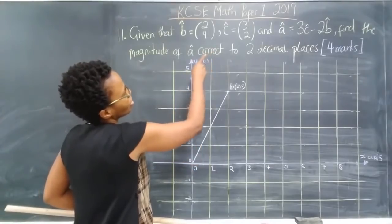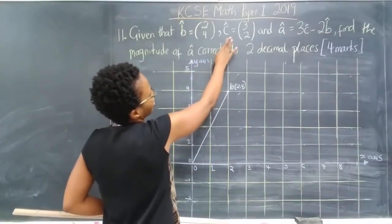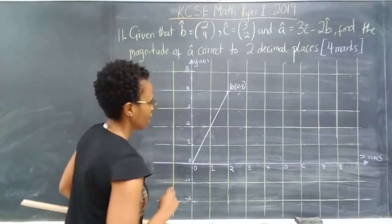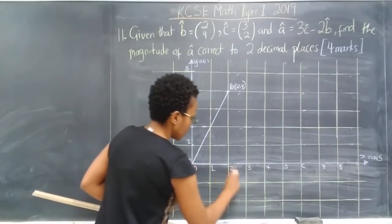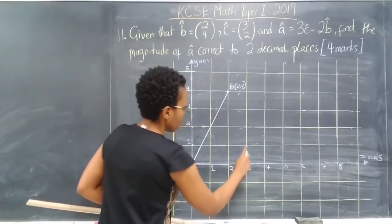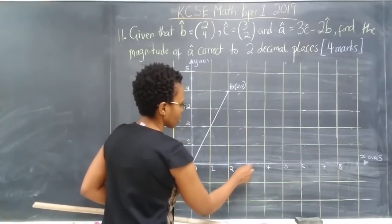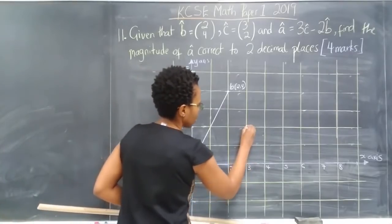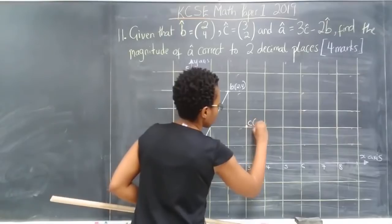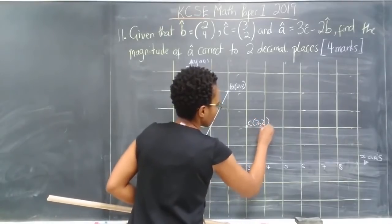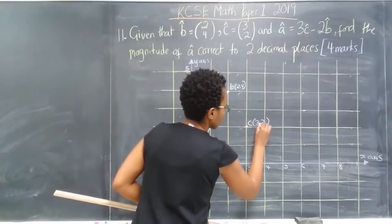And then the next step, let's find the coordinates of vector C. So C is 3 along the x axis, and 2 along the y. So here, 1, 2, 3, so that's here. So this is our point C, and those are the coordinates, (3, 2).